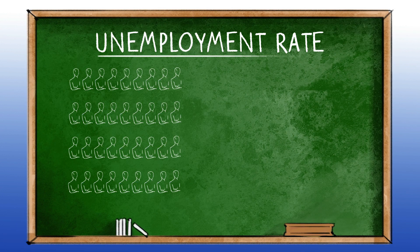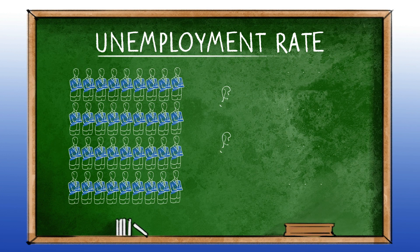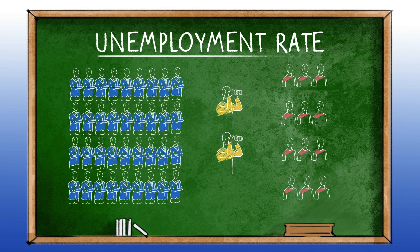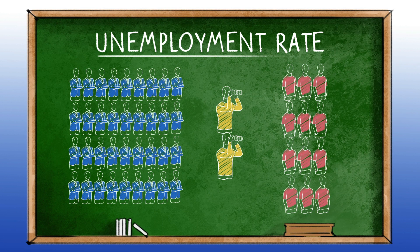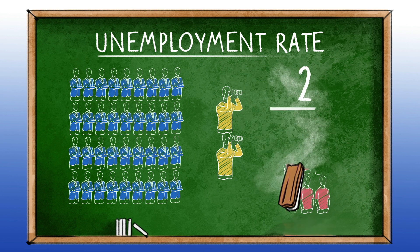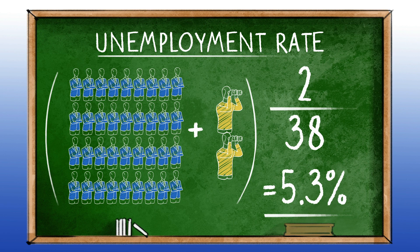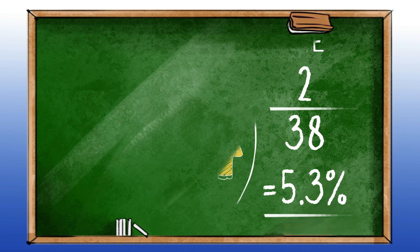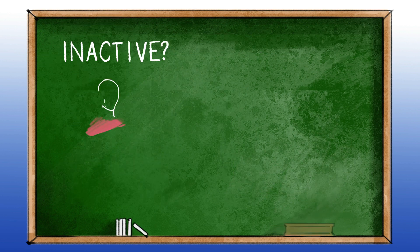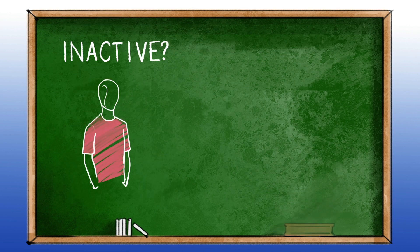The unemployment rate indicates the percentage of all those who are willing to work who do not have a job. In other words, it's a division of the unemployed by the sum of the employed and unemployed. In this calculation, the inactive are completely out of the picture.